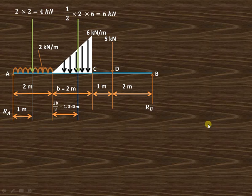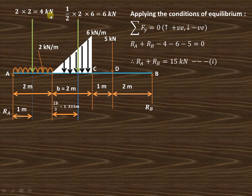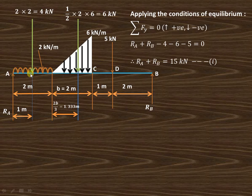First we'll convert the uniformly distributed load and uniformly varying load into point loads, then apply the conditions of equilibrium. The uniformly distributed load is 2 kilo newton per meter, meaning for 1 meter the load acting is 2 kilo newton. So for 2 meters, 2 into 2 gives a total UDL load of 4 kilo newton, and it acts at the center of this 2 meter length, which is 1 meter from the start.